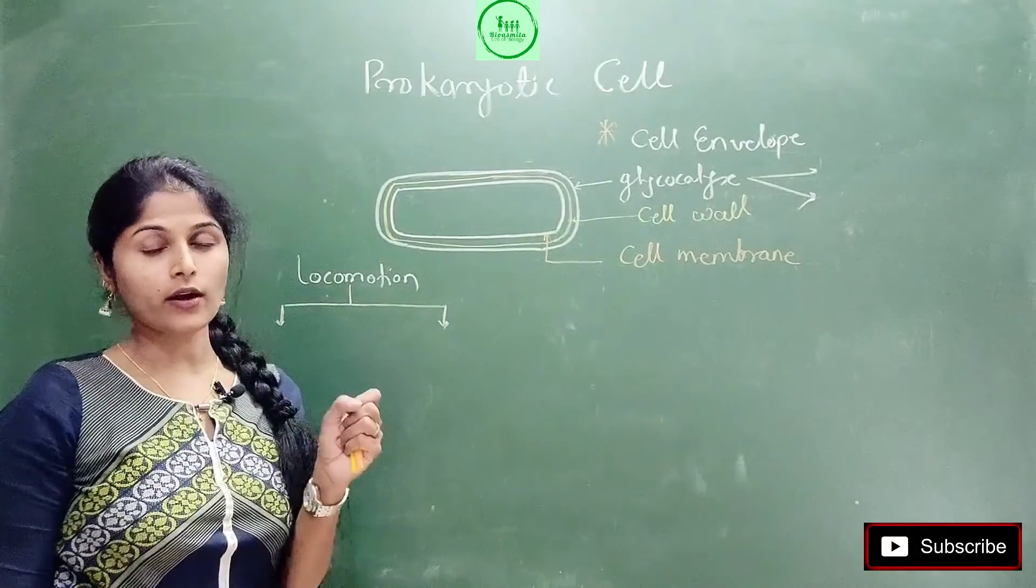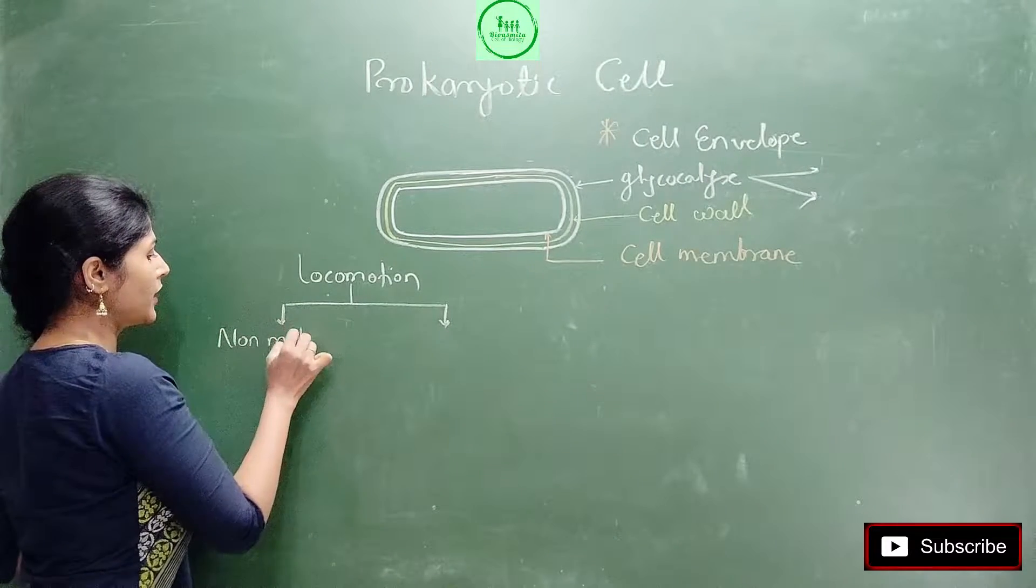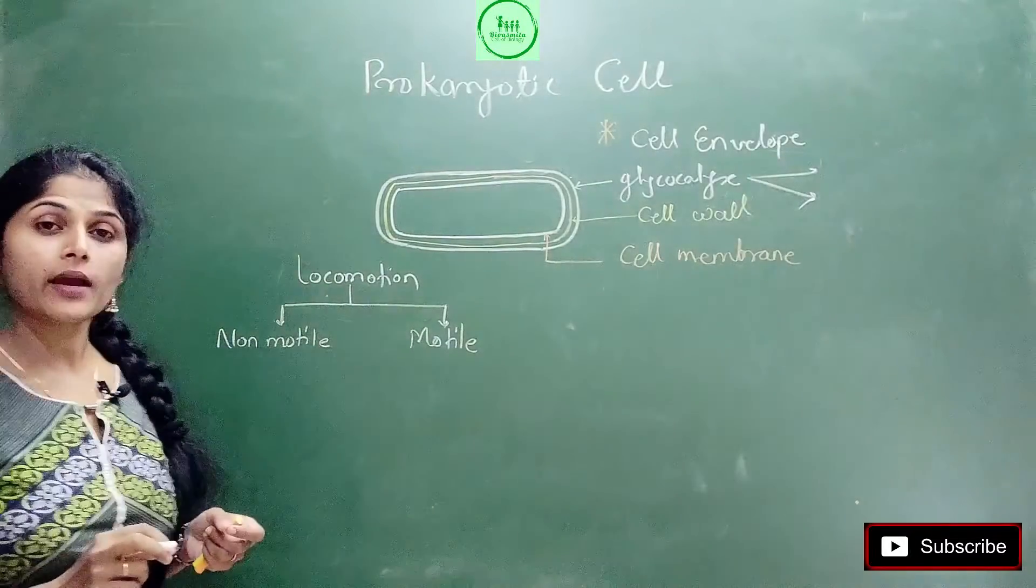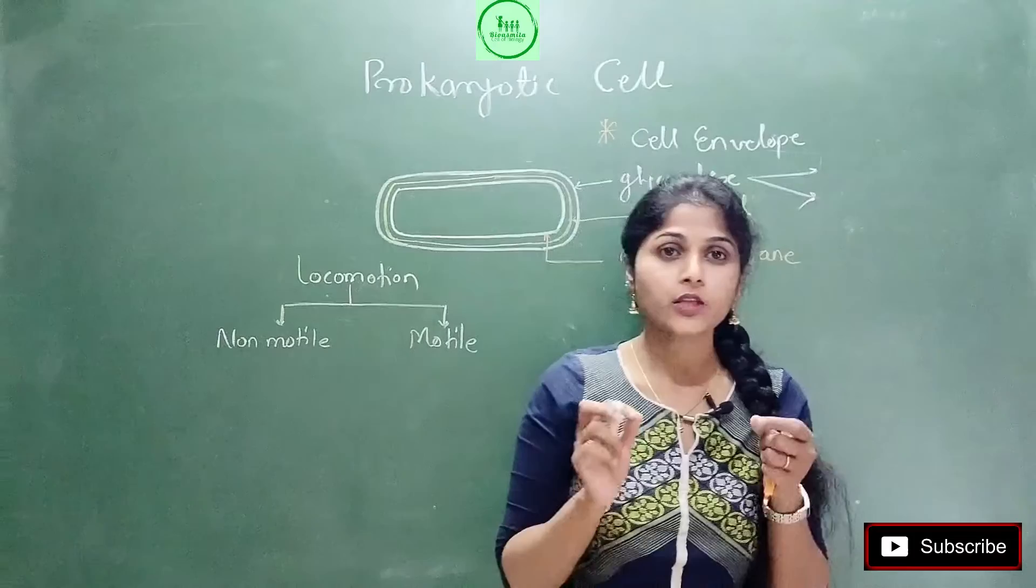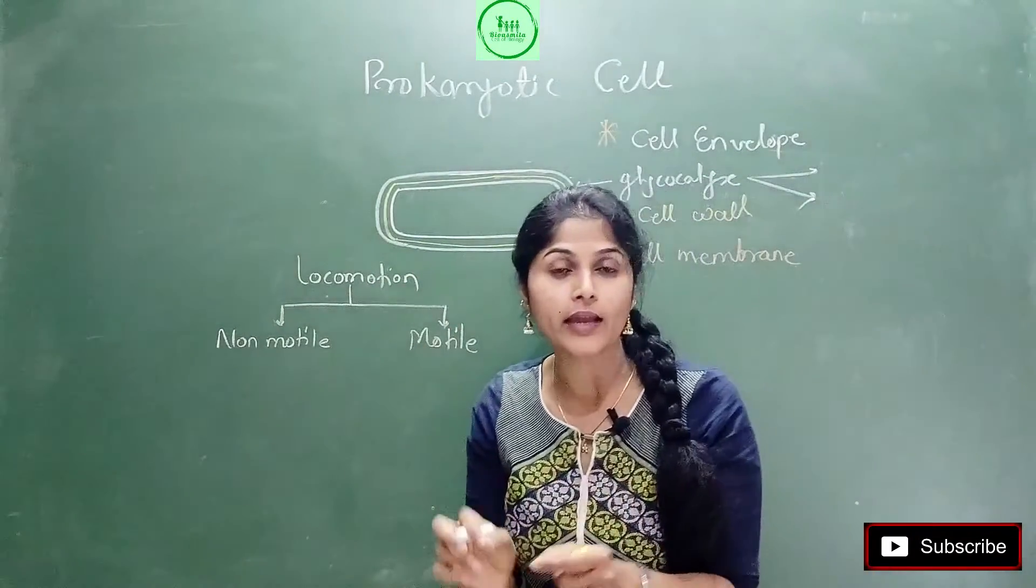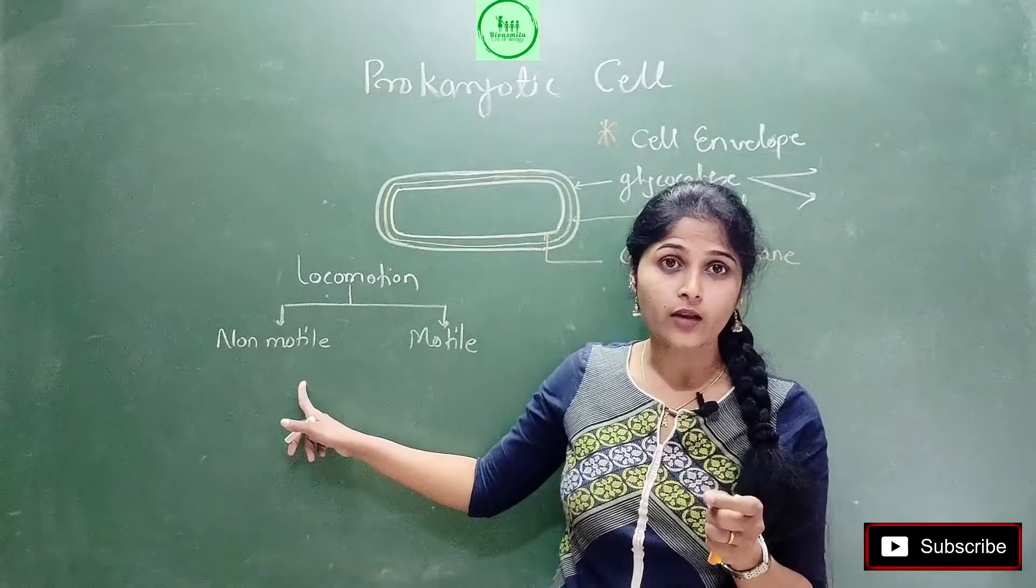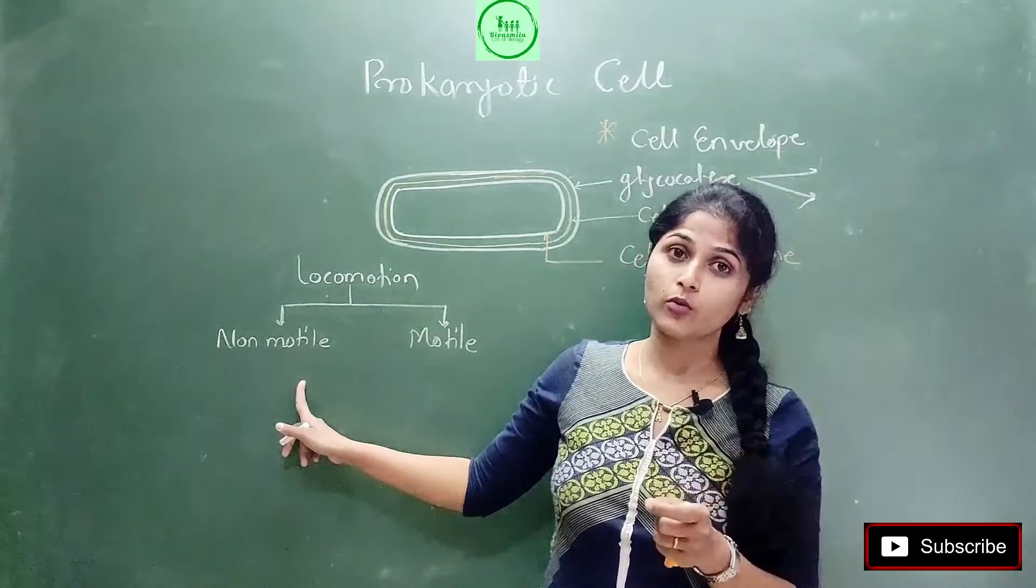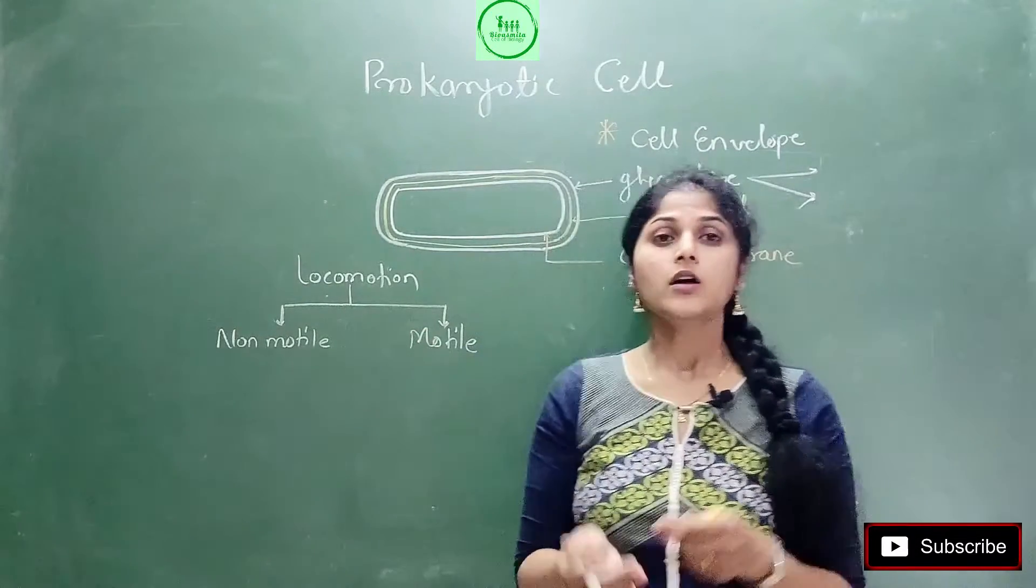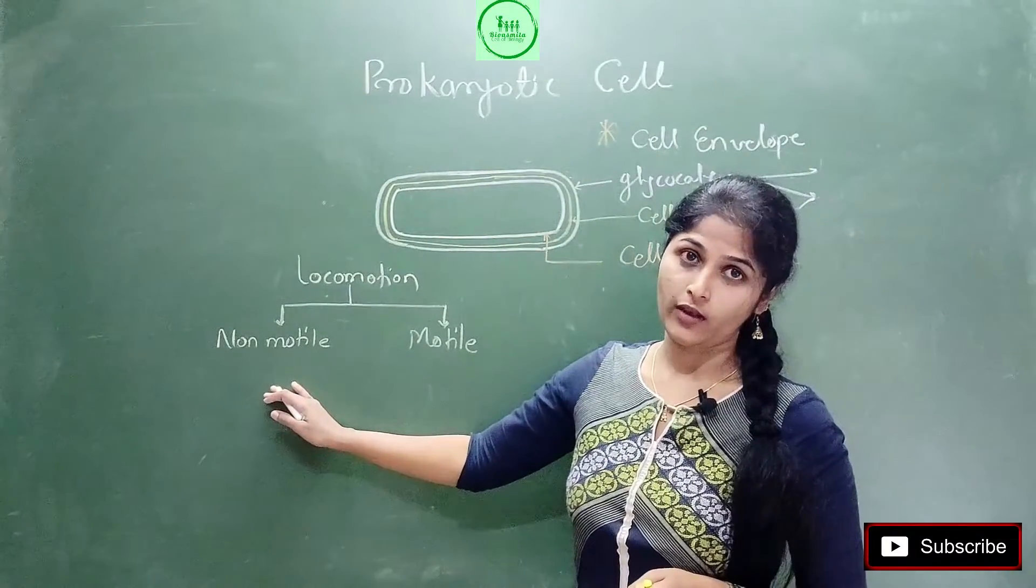All living organisms present on earth, on the basis of locomotion ability, are divided into two categories: non-motile and motile. Motile means the one who can go from one place to another place, and non-motile means those who are fixed in one place. Our plants are non-motile and animals are motile.